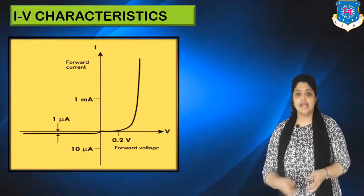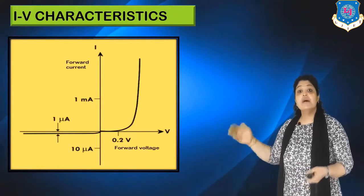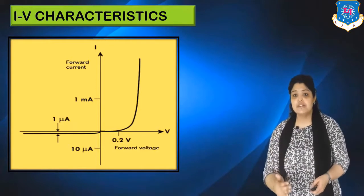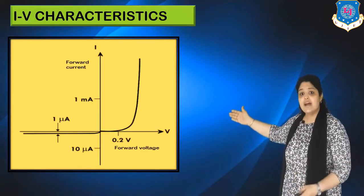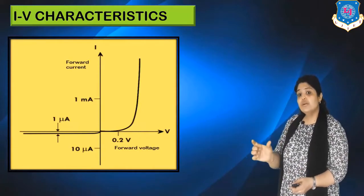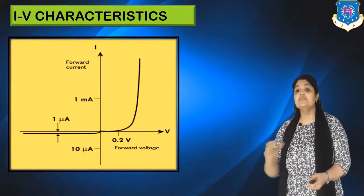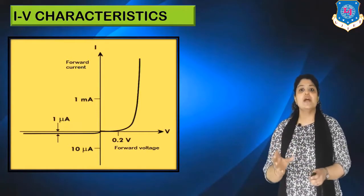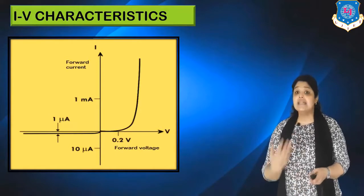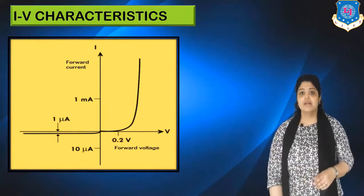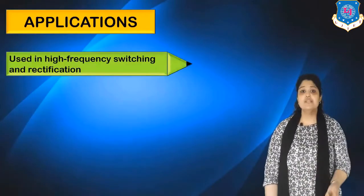Looking at the IV characteristics of a Schottky diode: since no current flows in reverse bias, only forward characteristics are shown. The threshold voltage is very small — around 0.2 V — compared to silicon and germanium, at which a sudden increase in current occurs. This is what gives the Schottky diode its fast switching action.